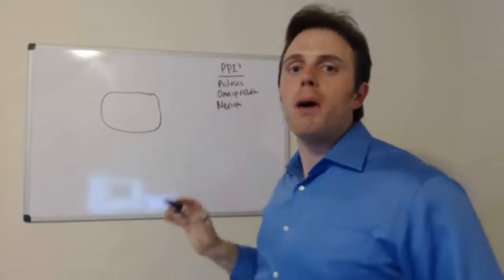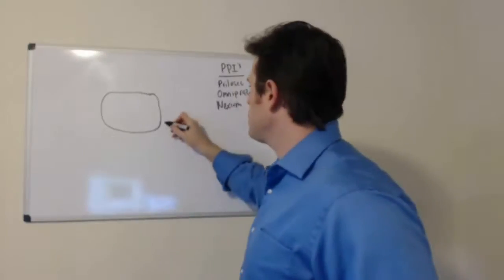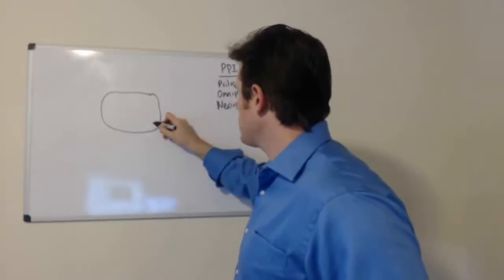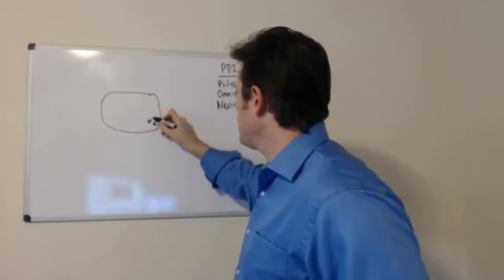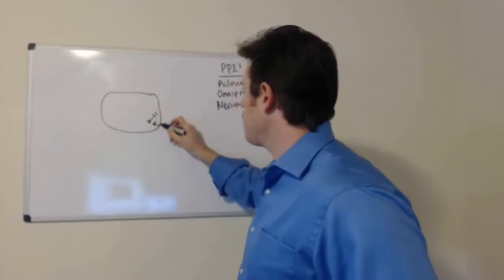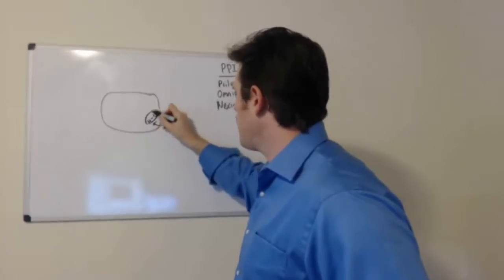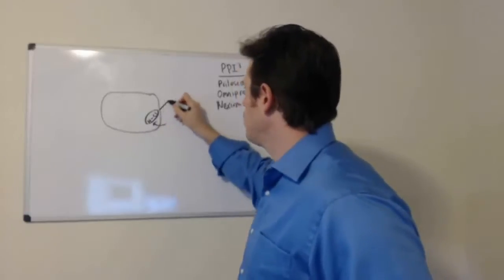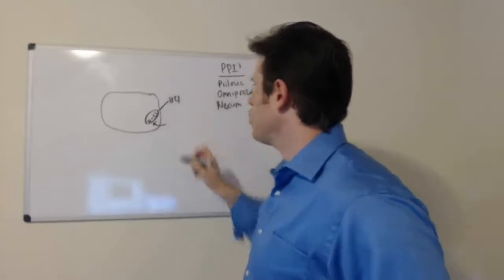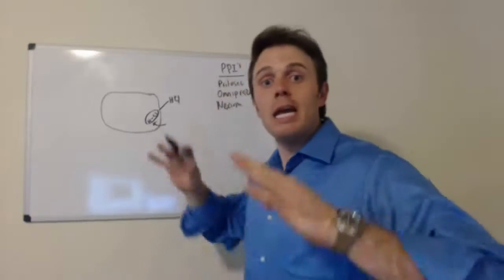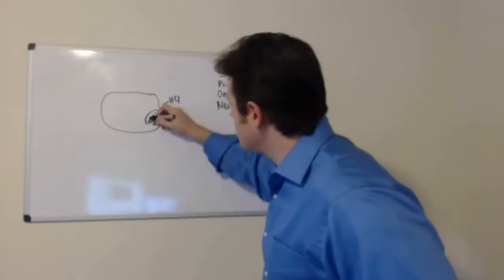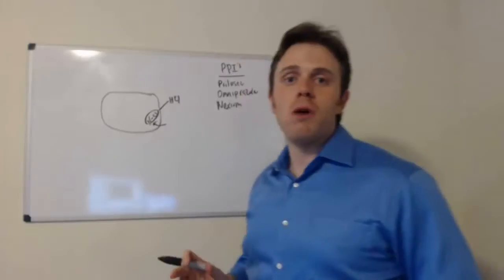These drugs are proton pump inhibitors. So what happens is hydrogen essentially gets pumped up into the stomach lining and it joins with a chloride molecule to form hydrochloric acid or HCl for short. So what's happening is these medications are actually inhibiting hydrogen production. So it's knocking out that hydrogen molecule.